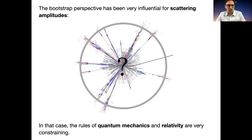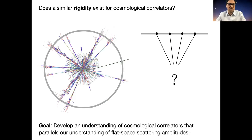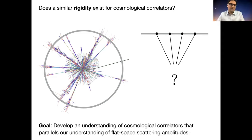The bootstrap perspective has been very influential in the case of scattering amplitudes. The rules of quantum mechanics and relativity are very constraining — the space of self-consistent scattering amplitudes is highly constrained by unitarity, locality, and Lorentz symmetry. We'd like to ask whether there's a similar rigidity for cosmological correlators: are there similar rules that cosmological correlators must satisfy that will restrict the space of allowed correlations? The goal is to develop an understanding of cosmological correlations on the same level as flat-space scattering amplitudes — we're just at the beginning, starting to understand tree-level processes.